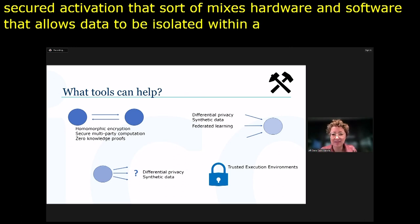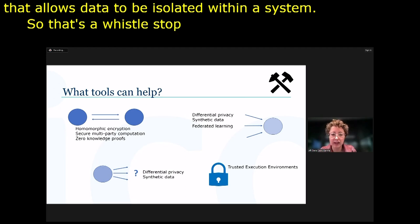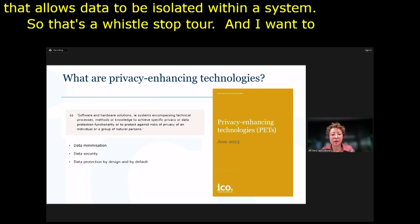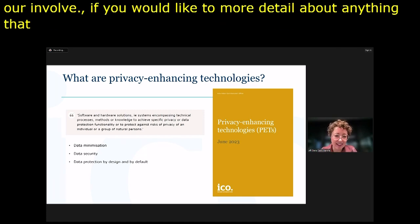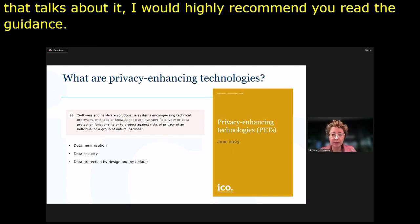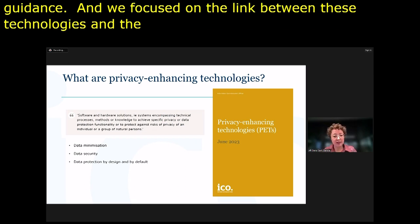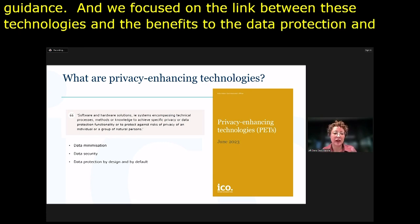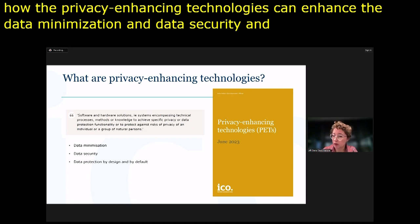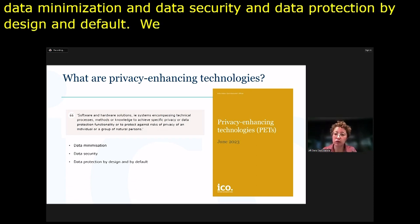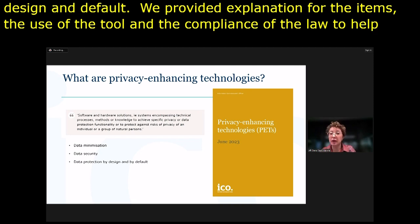Moving on to the ICO's involvement: in June this year we published guidance on privacy enhancing technologies. We focused on the link between these technologies and the benefits they bring to data protection law — how PETs can support data minimisation, data security, and data protection by design and by default. We provided explanations for all the technologies and a mapping between the use of each tool and compliance with the law, to help both decision-makers in organisations and developers.